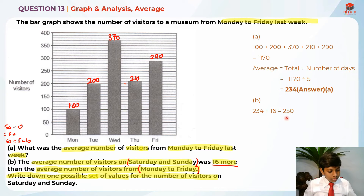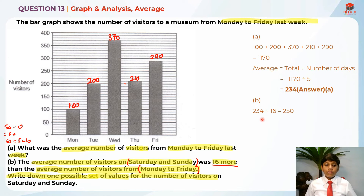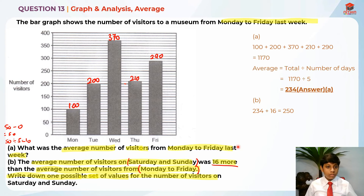For Part B, what I've done first is take 234 plus 16, which is 250. Why? Because the average for Saturday and Sunday is 16 more than Monday to Friday, which was 234. So the new average is 250. Now I'm going to find the total value for Saturday and Sunday. That's two days, and the average is 250. In order to find the total, we times 250 by 2, which gives us 500.